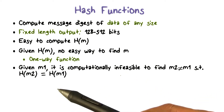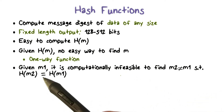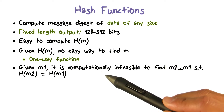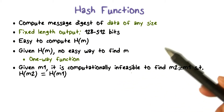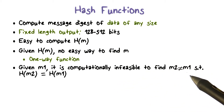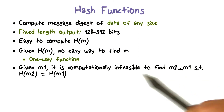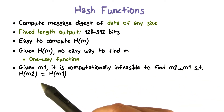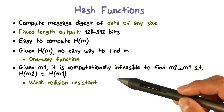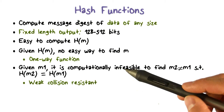Another property of hash functions is that, given a message m1, it should be computationally infeasible to find a different message m2 such that they have the exact same hash value. This is the weak collision resistant property, and it is an essential property for message authenticity and integrity protection.